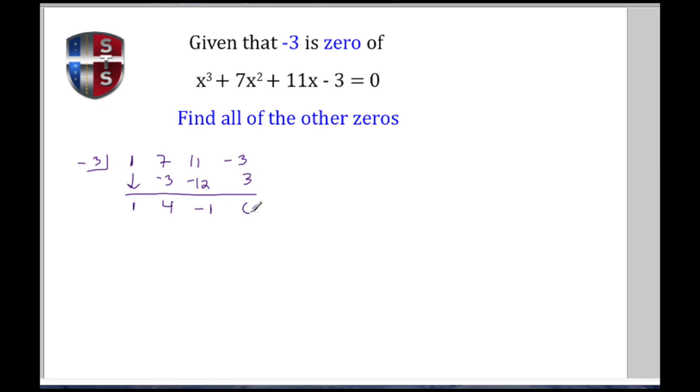Then -3 times -1 gives me a positive 3, and just as I said, -3 is a root or a zero because I see my remainder here is 0.